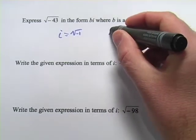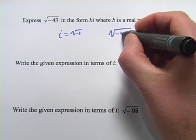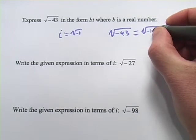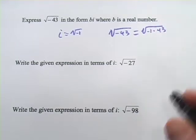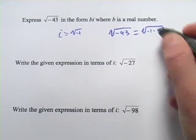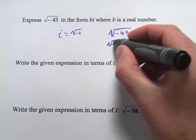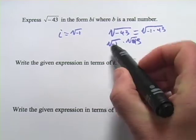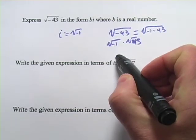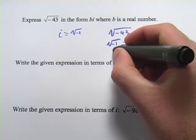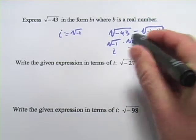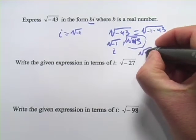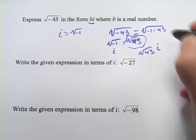The way to do that is to just factor negative 43. We're going to set that equal to negative 43 is negative 1 times 43. And the square root of negative 1 times 43 can be broken up into the square root of negative 1 times the square root of 43. And we just said square root of negative 1 equals i. So, here's our i. And then what's left is our b. If we want to put it in the form of b times i, we would say the square root of 43 times i.